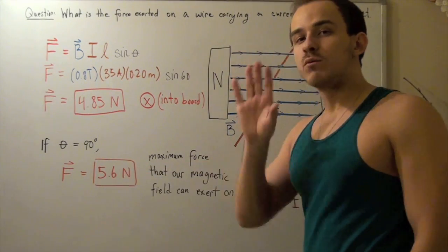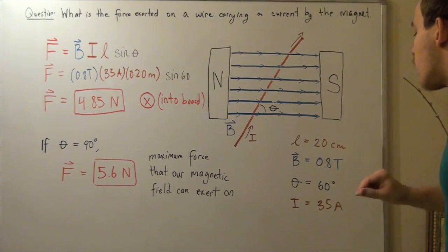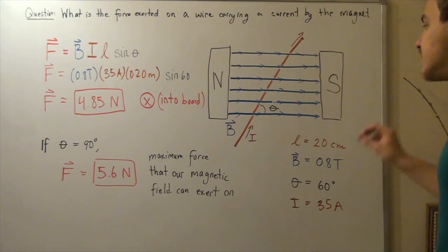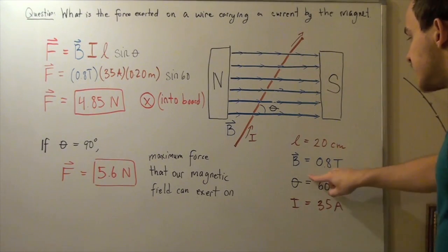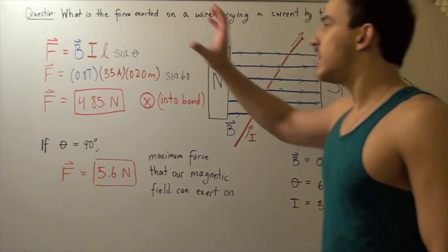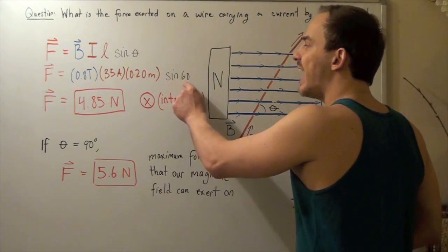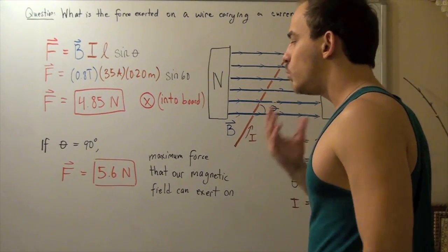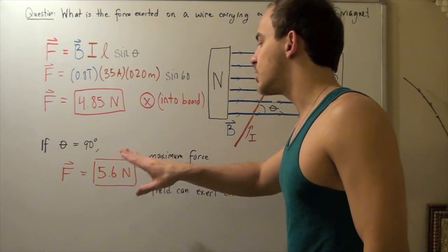Now, what is our force? And we're making the assumption that our current and length stays exactly the same. And this stays the same as well. So, we plug our things in, and we plug sin 90, which is simply 1, and we get 5.6 newtons.